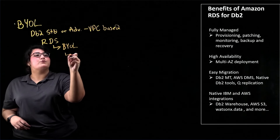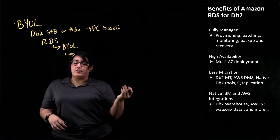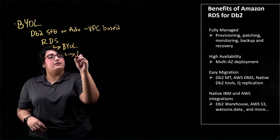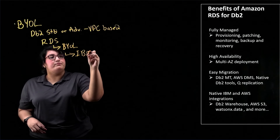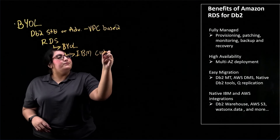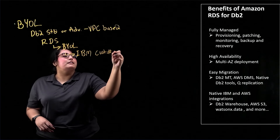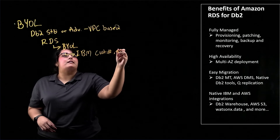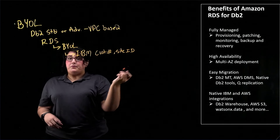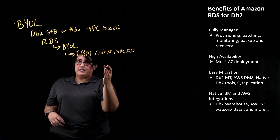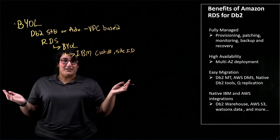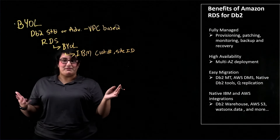Scroll down, and to validate your DB2 license, we do ask that you enter your IBM customer number and site ID. Now that you've done this, go ahead and click through, and you can get started on your RDS for DB2 database.